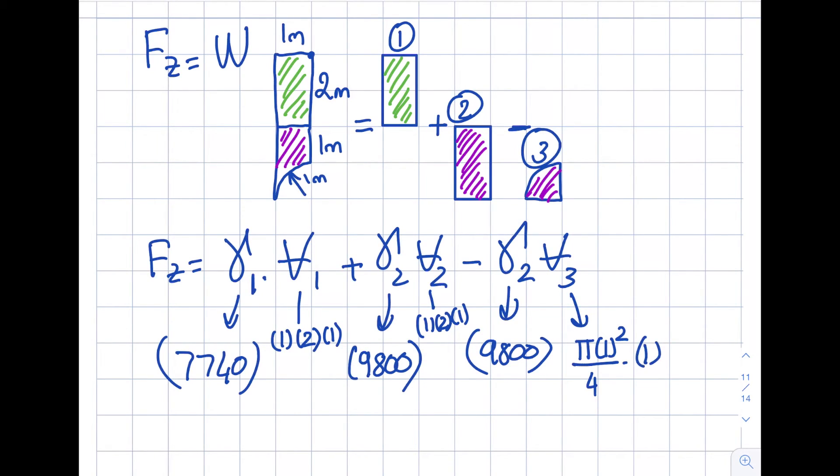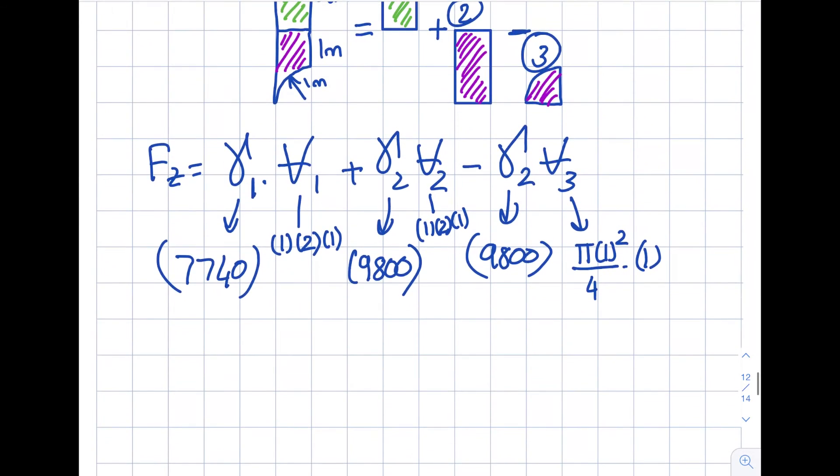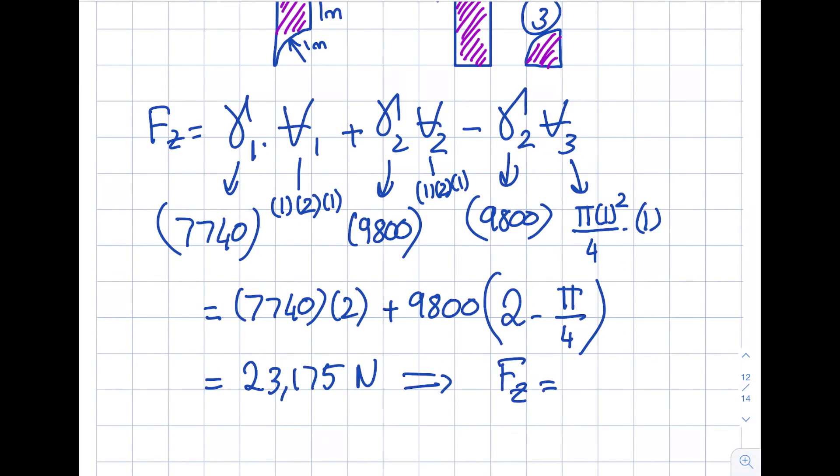So now let's try to make this a little bit better. So I'm going to get 7740 times 2 plus 9800 parenthesis, let's see, 2 minus pi over 4, and from here I'm going to get twenty-three thousand one hundred seventy-five, give or take, newtons. If I convert this to kilonewtons I'll get my FZ as 23.2 kilonewtons.